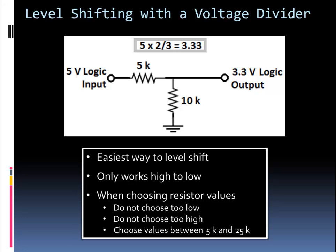You tie the large one to ground and put the small one in series on the 5V logic input side. Then all you have to do is multiply the input voltage logic level by 2 thirds. And if that's 5V, you're going to get 3.33, which is essentially 3.3V output. So easy way to convert 5V to 3.3V.